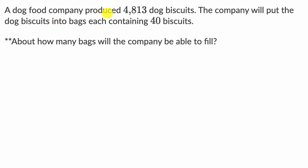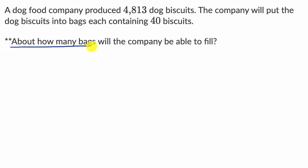We're told a dog food company produced 4,813 dog biscuits. The company will put the dog biscuits into bags, each containing 40 biscuits. About how many bags will the company be able to fill? Pause the video and think about it. Remember, you don't have to figure out exactly how many bags — they say about how many bags.